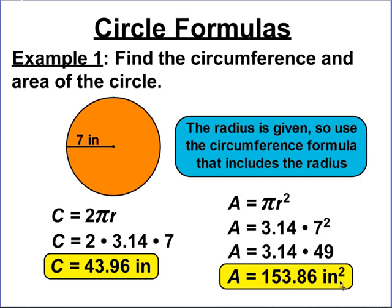And 3.14 times 49 is 153.86 or 153 and 86 hundredths. The label is inches squared because, again, every area, regardless of what shape you're calculating for, has an exponent of 2 because you're calculating how many little square inches you can fit inside that circle.